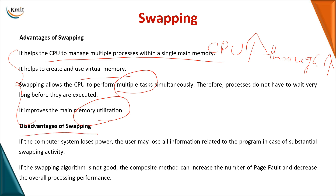The disadvantages of swapping include: if the system loses power during swapping, all information in that process will be lost. Also, if the swapping algorithm is poor, it can lead to page faults — where required data is not present in main memory and must be fetched from secondary memory each time. Page faults will be covered in detail during the paging topic.